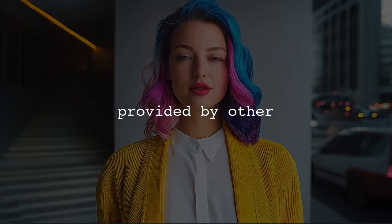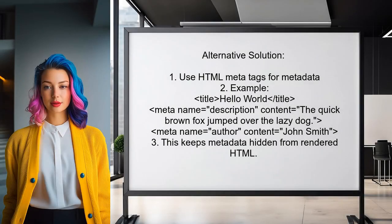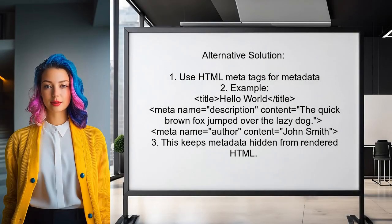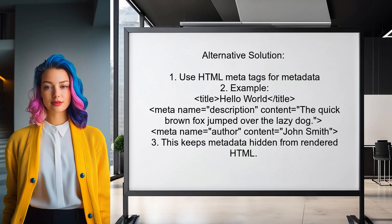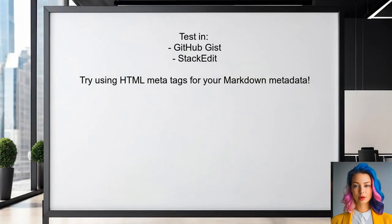Let's look at the answers provided by other users. An alternative approach for embedding metadata in Markdown is to use HTML meta tags. This method works well because most Markdown interpreters recognize HTML and won't render these tags, allowing you to store metadata without it appearing in the final output. You can test this method in platforms like GitHub Gist or StackEdit to see how it works.